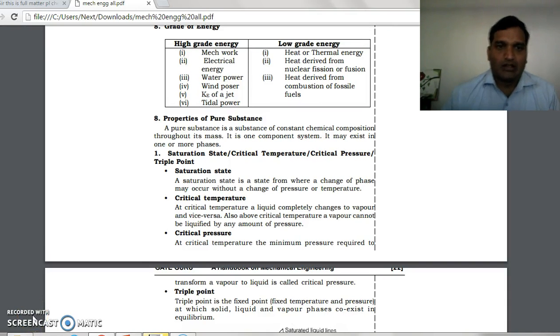Good afternoon. Today we will see properties of pure substances. A pure substance is a substance of constant chemical composition throughout its mass. It is a one-component system. It may exist in one or more phases.